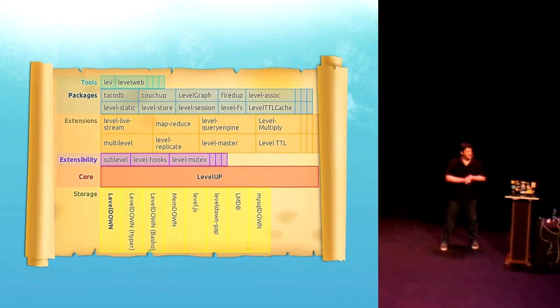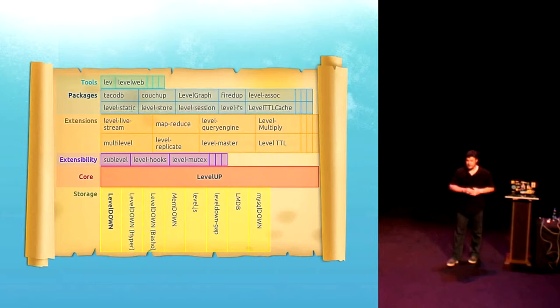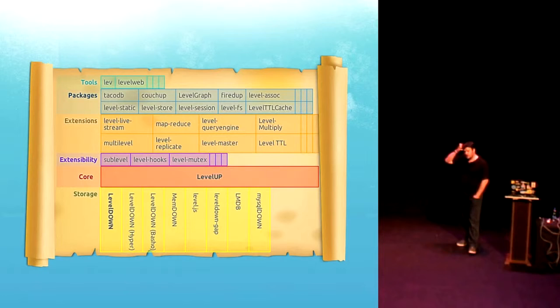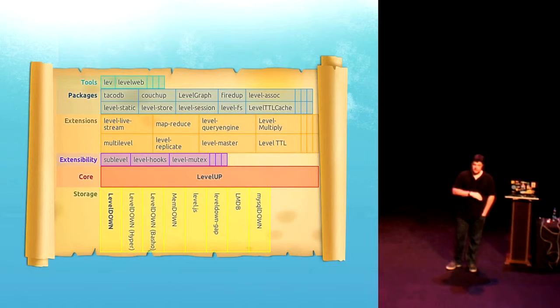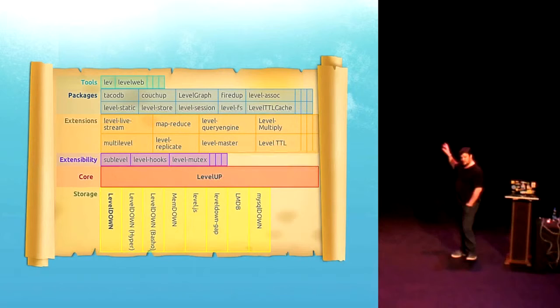Then we've got tools at the top there, which are tools for interacting with databases. So they're built on these things for interacting with them. And one of the main ones is Lev by Paolo, who's here as well. And this is a tool where you can inspect the contents of your database on the command line. The important bit I want to talk about, though, is the yellow bits below, which are our storage units. So Levelup doesn't implement a whole database in itself. It's an abstraction layer. And below Levelup, we have these different pluggable storage layers that we can use.